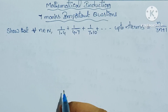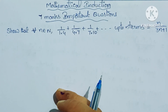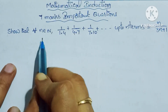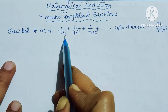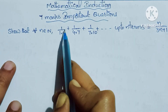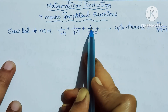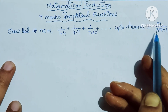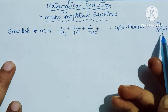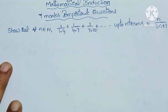Hello everyone, welcome to this lesson on mathematical induction — important 7 mark sums. We will show that for all n belonging to natural numbers: 1/(1×4) + 1/(4×7) + 1/(7×10) + ... up to n terms is equal to n/(3n+1). This is the mathematical induction problem.